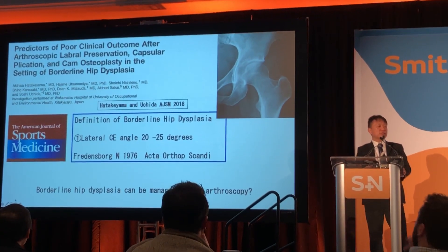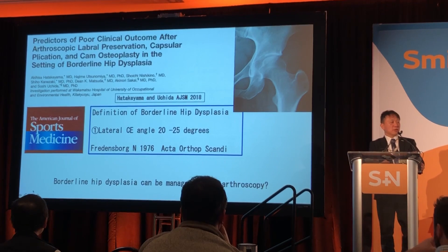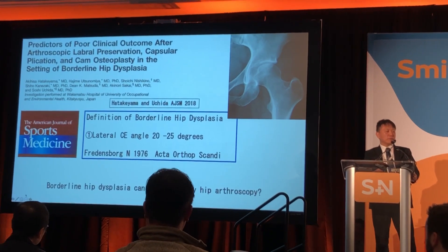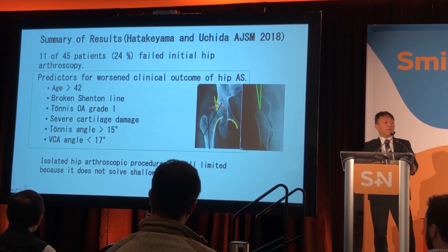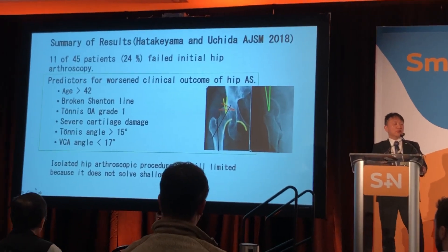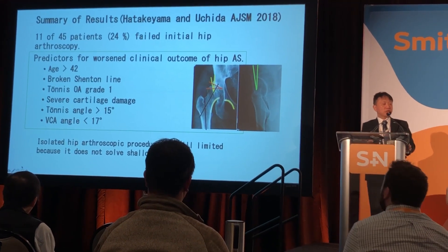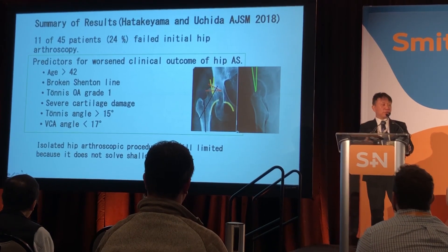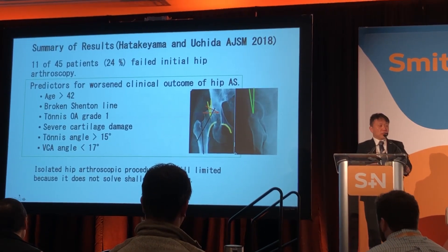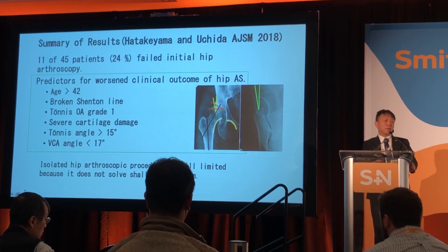Our study examined predictors of poor clinical outcomes after arthroscopic labral repair, capsular plication, and cam osteoplasty in the setting of borderline dysplasia, defined as lateral center edge angle 20 to 25 degrees. We found that 11 of 45 patients had failed initial hip arthroscopy. Predictors of worse clinical outcomes included age older than 42, broken Shenton line, Tönnis grade 1 or 2, severe cartilage damage, Tönnis angle greater than 15 degrees, and VCA angle less than 17 degrees, suggesting anterior acetabular deficiency. Those patients should not undergo hip arthroscopy alone.